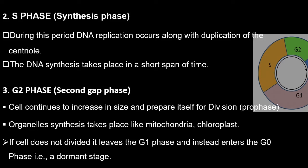After G2 comes the M stage — the actual cell division. M stands for mitosis. 'Mito' means thread and 'osis' means state, so in this thread state, chromosomes are present. In this phase, the cell divides its copied DNA and cytoplasm to make two new cells. The nuclear envelope breaks down, the cytoskeleton reorganizes, and copied DNA is distributed into two different cells.